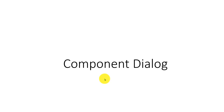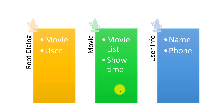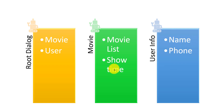So I am going to talk about component dialog and user control. For example, I am going to create a bot — a movie ticket booking bot. The movie ticket booking flow will have movies, a movie list, showtime, and display options, along with name and phone number. These two components are split into two dialogs.